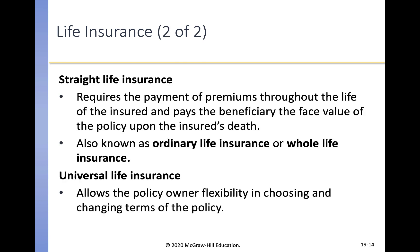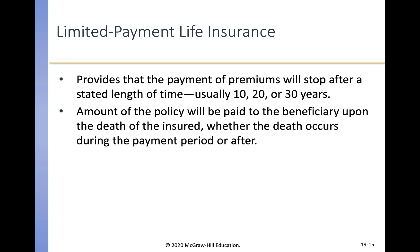There are different types of life insurance. Straight life insurance, also called ordinary or whole life insurance, requires premium payments throughout the insured's whole life and pays the beneficiary the face value upon death. Universal life insurance allows the policy owner flexibility in choosing and changing policy terms; these policies are often investments from which you can draw dividends. Limited payment life insurance provides for premium payments only for a certain period — 10, 20, or 30 years — but pays the policy amount to the beneficiary upon death regardless of when it occurs.